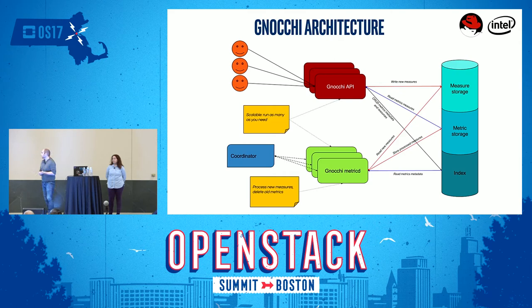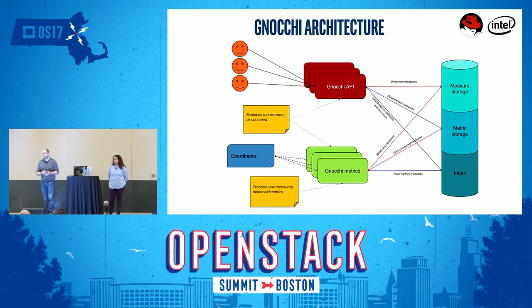The way to interact with Gnocchi is through its API. The API is stateless since it's a REST API, so it's pretty easy to scale it out — you can have any number of workers. Same goes for the MetricD workers. The more metrics you send to Gnocchi, the more measures you have, the more workload you send to it, and it's going to need to scale.